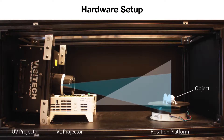This is how our entire setup looks. We place these two projectors in front of a rotation platform, and all you have to do is place your object on the rotation platform — the system is then ready to update the appearance of the object.